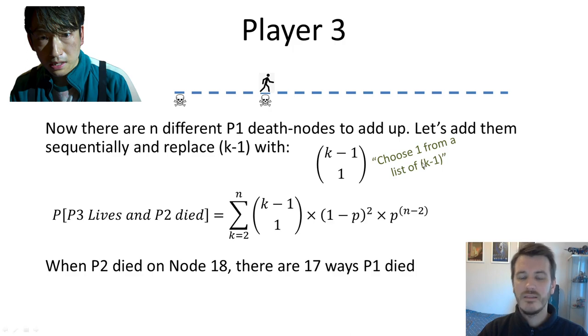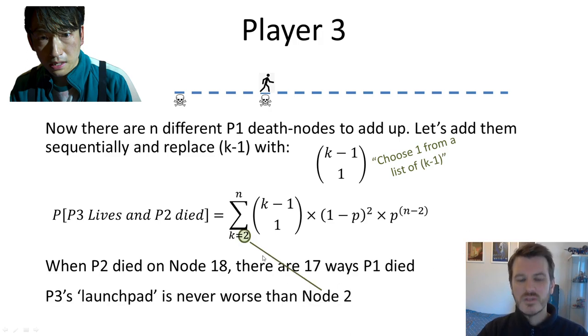Now, to double down on what I said before, when player 2 died on node 18, there are 17 different ways that player 1 died. So this becomes a 17. By contrast, when player 2 dies on node 2, there's actually only one combination. There are not 17 ways that player 3 finds himself winning in that scenario. There's only one way he finds himself winning, which is that he has to do all the work as opposed to having any help from his predecessors. So that's an important result, is that player 3 can never begin the game on node 1 because player 1 or 2 will certainly have lived on node 1.